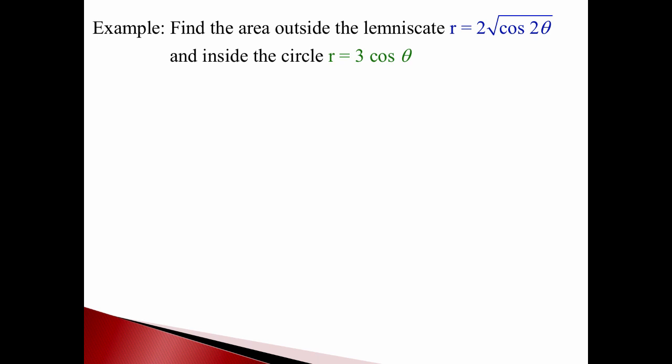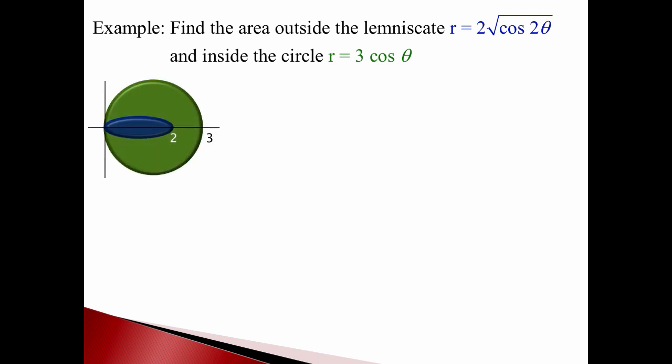Here's another surprise — one last example. We want to find an area outside this blue lemniscate and inside the circle. Drawing those graphs: the circle r = 3cosθ is a big circle going all the way out to 3. The lemniscate is r = 2√(cos2θ). That's only half of it — there's another half that's not drawn because we only want what's outside the lemniscate and also inside the circle.